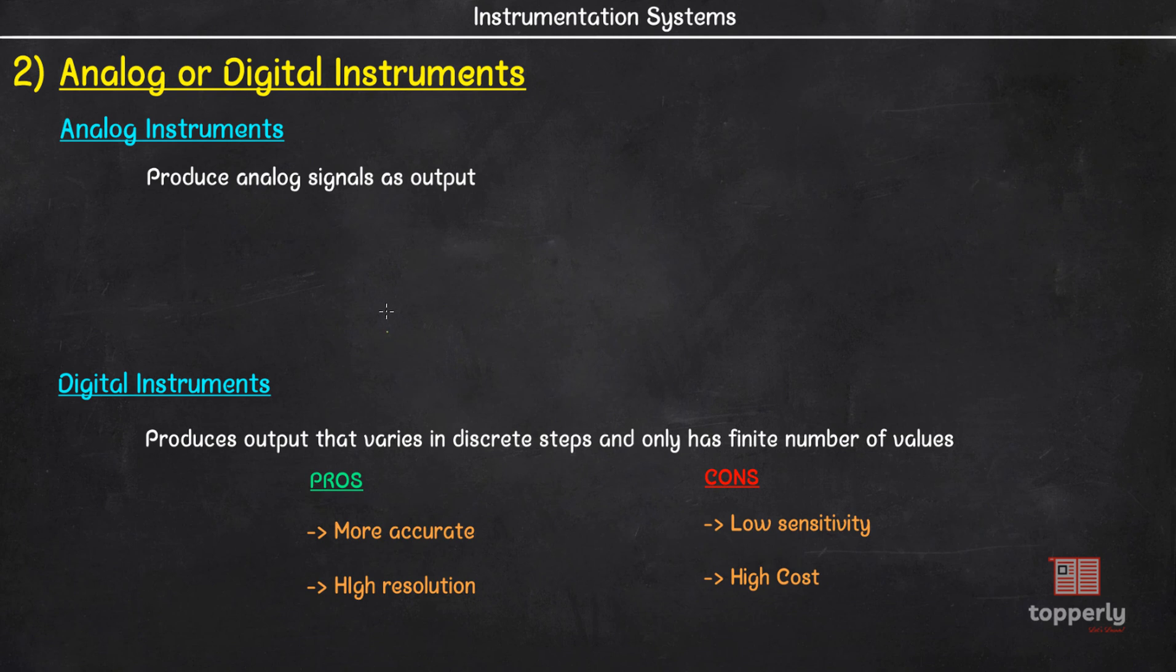So when it comes to choosing between analog or digital devices for measurement, we weigh in factors like accuracy, power requirement, cost, sensitivity and portability and decide depending on our requirements.